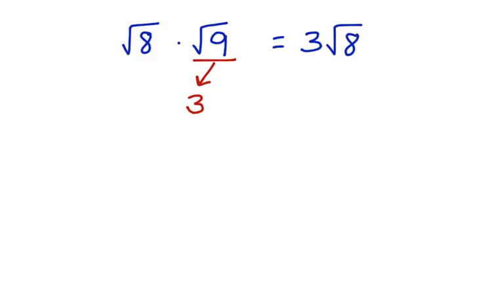And you might think that you're done, but we're not finished yet. The square root of 8 can be simplified. It can be simplified to the square root of 4 times the square root of 2. Square root of 4 becomes 2.